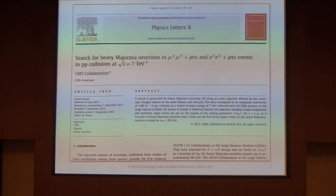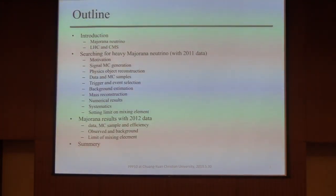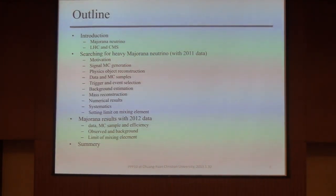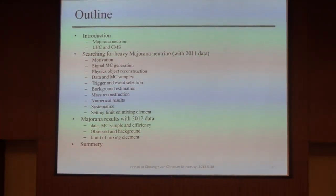The di-electron channel was already studied with another student from last year. As everybody knows, in the standard model, neutrinos structurally have no mass and there is no right-handed neutrino. However, various experimental results strongly indicate that neutrinos do have a very small mass, and they also exhibit flavor mixing.